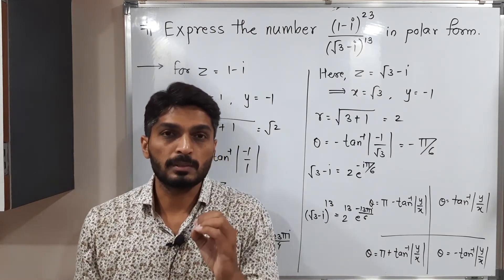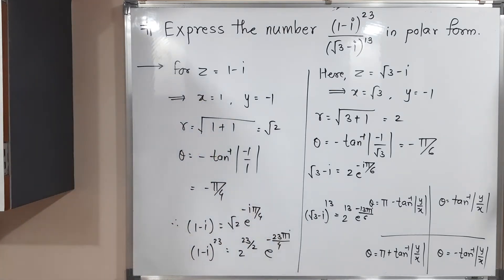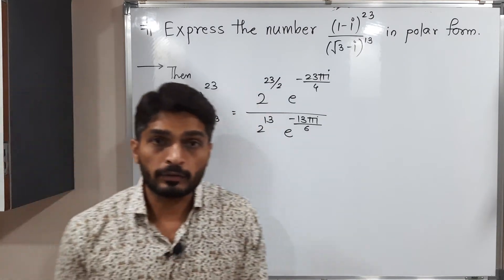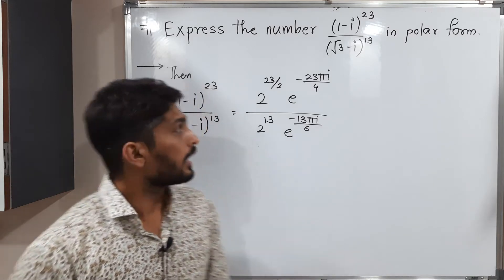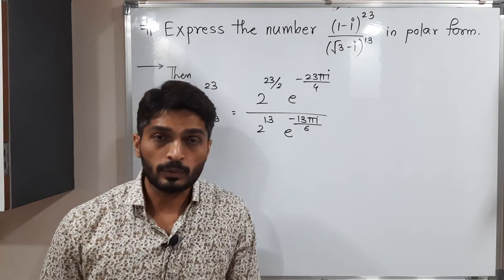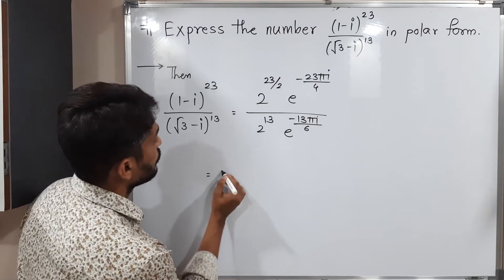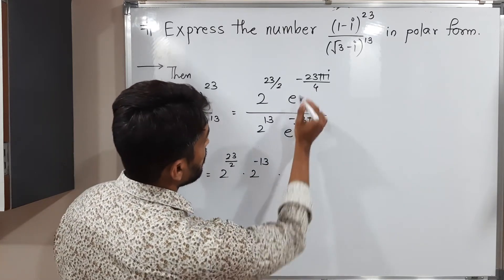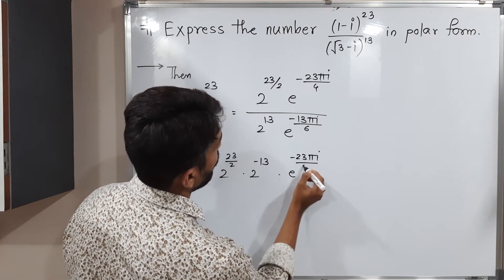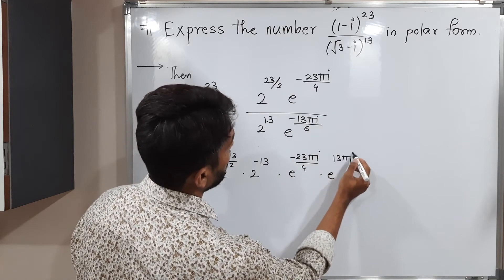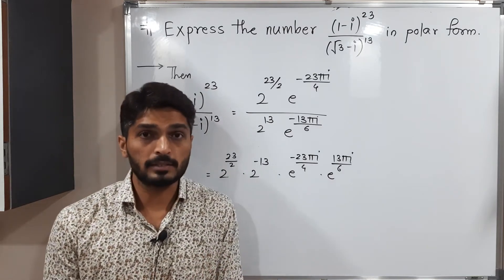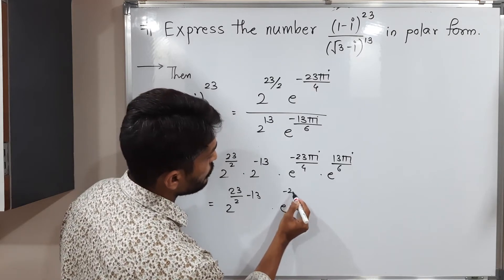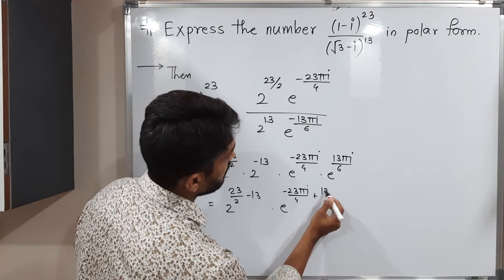Now let us take the ratio of both complex numbers. We have already calculated the exponential forms, so simply putting them in. Shifting the denominator to the numerator — since it has a positive power, shifting it gives a negative power — we get 2 raised to 23/2 times 2 raised to minus 13, times e raised to minus 23 pi i by 4 plus 13 pi i by 6.